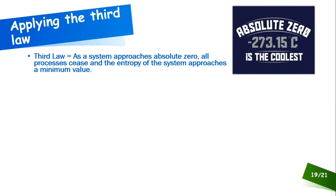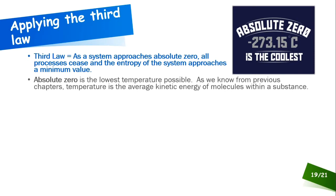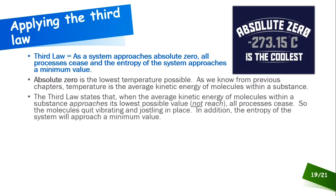Now let's look at the third law of thermodynamics: as a system approaches absolute zero, all processes cease and the entropy of the system approaches a minimum value. I worded it as 'it is impossible to reach absolute zero,' which is another way of expressing the same idea. Absolute zero is the lowest temperature possible — we know from previous chapters that temperature is the average kinetic energy of the molecules within a substance.